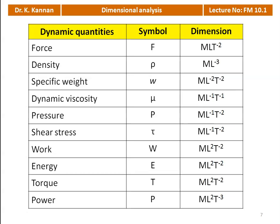Dynamic quantities: force has dimension MLT⁻² (unit: Newton); density ML⁻³ (kg/m³); specific weight ML⁻²T⁻²; dynamic viscosity ML⁻¹T⁻¹; pressure ML⁻¹T⁻² (unit: Newton per meter square); shear stress ML⁻¹T⁻²; work ML²T⁻² (Joule); energy ML²T⁻² (Joules); torque ML²T⁻²; and power ML²T⁻³. You should know the unit of all quantities so that from the unit you can write in terms of MLT.